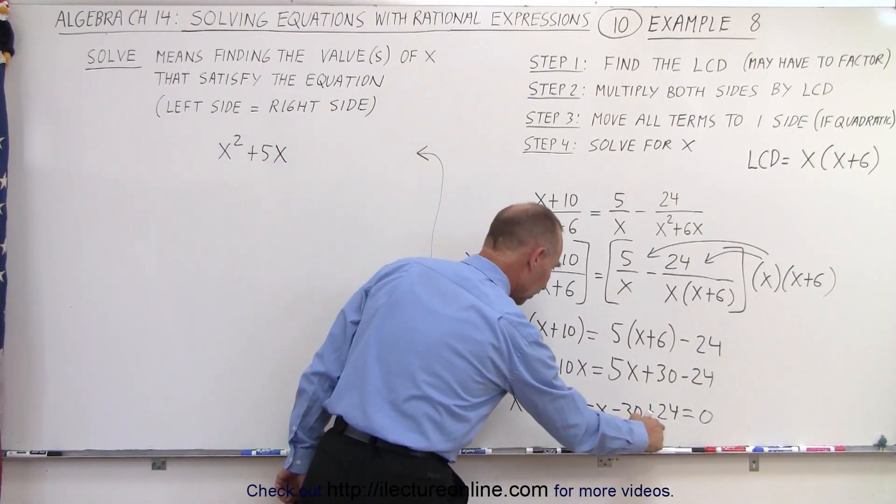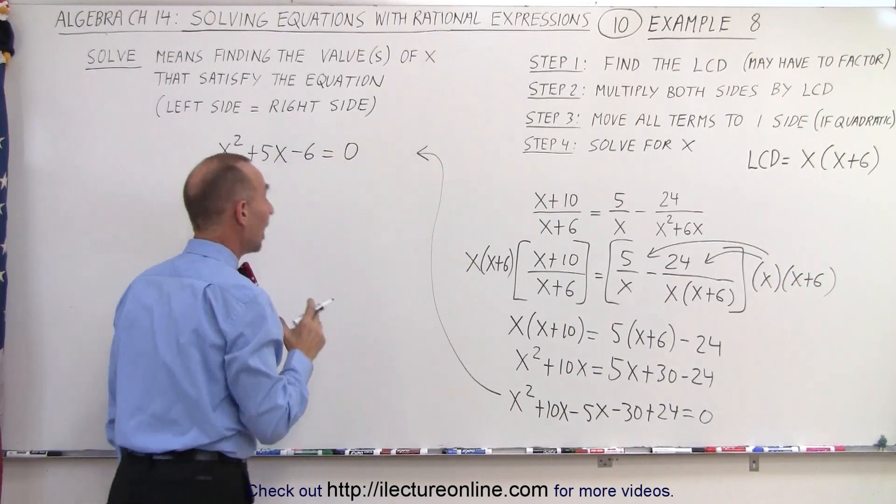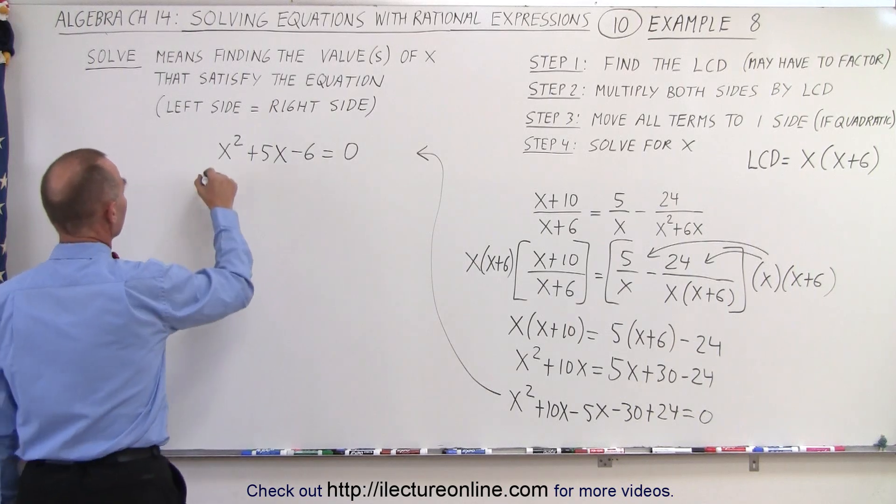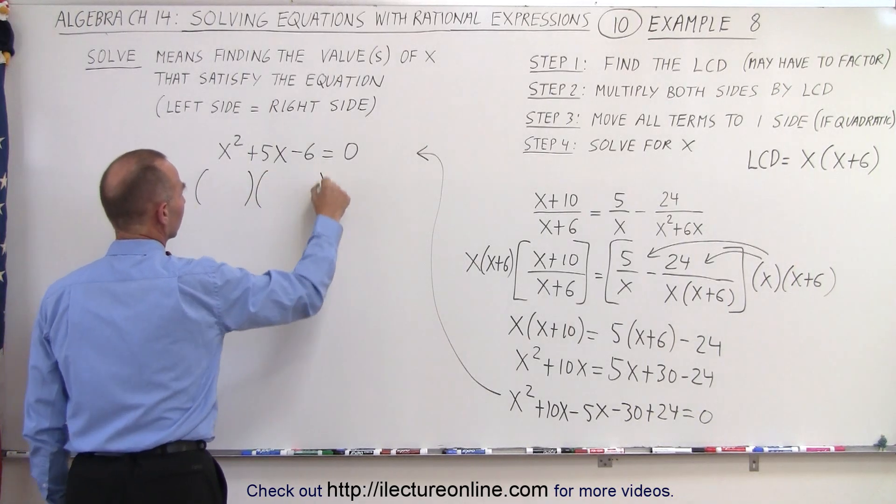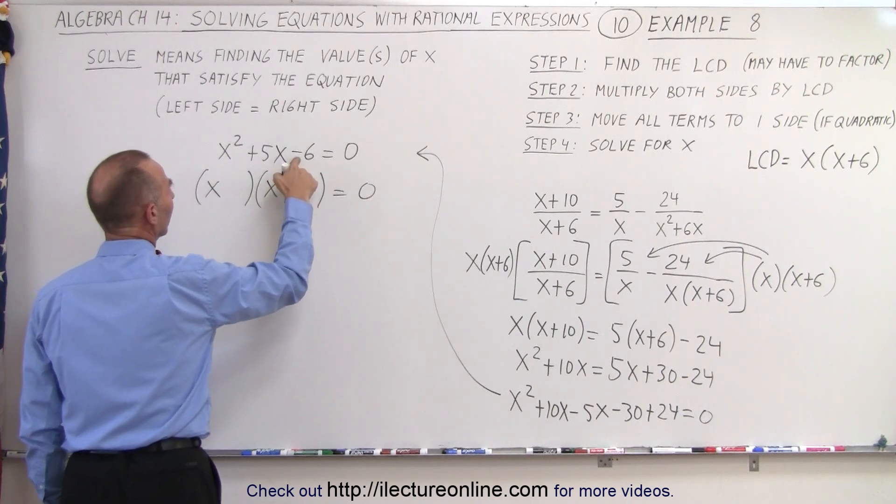So plus 10x minus 5x, which is plus 5x. And then we have -30 + 24 is -6, and that equals zero. And so now to solve this we have to factor the left side.